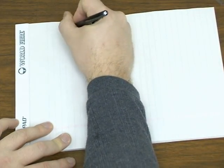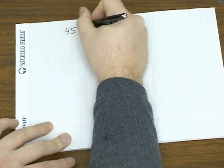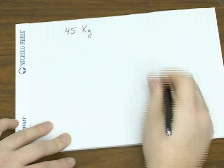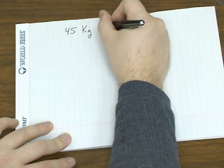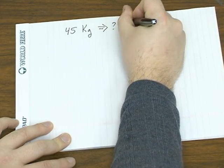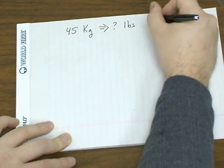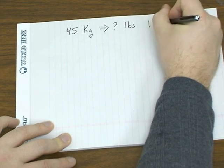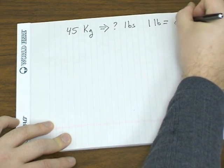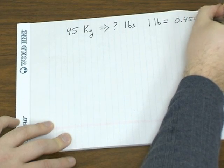Let's look at another example. Let's say you have something that weighs 45 kilograms. And you want to know how much that weighs in units of pounds. Now, a common conversion is that 1 pound is 0.454 kilograms.